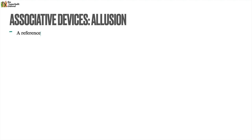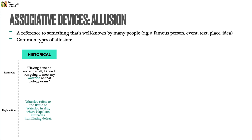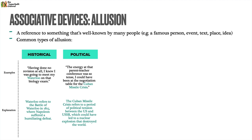Allusion is a reference to something that's well known by many people, or a given group of people — famous persons, events, texts, places, or ideas. There are several types. Historical allusion: 'Having done no revision at all, I knew I was going to meet my Waterloo on that biology exam' — Waterloo refers to the Battle of Waterloo in 1815, where Napoleon suffered his humiliating final defeat. Political allusion: 'The energy at that parent-teacher conference was so tense, I could have been at the negotiation table for the Cuban Missile Crisis' — a period of political tension between the US and USSR in the 1960s that could have led to nuclear catastrophe.